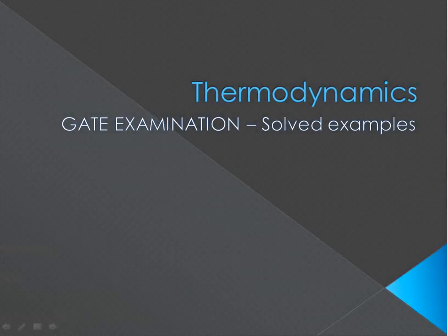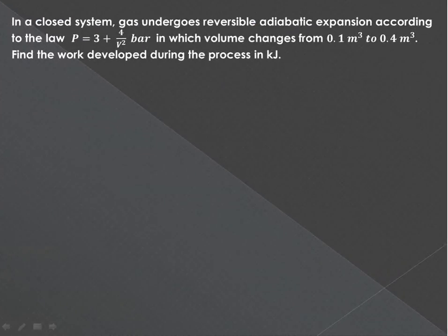Let us see some more examples on basic concepts of thermodynamics. Suppose in a closed system, gas undergoes reversible adiabatic expansion process and it follows the law: pressure P equals 3 plus 4 upon V squared, and the unit for this pressure is bar. This is important - we have to convert this bar into kilopascal by multiplying this value by 10 raised to 2.